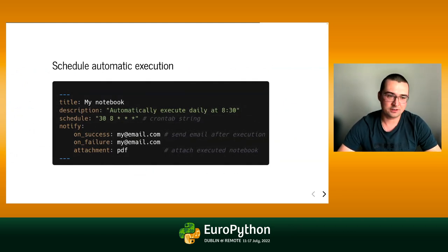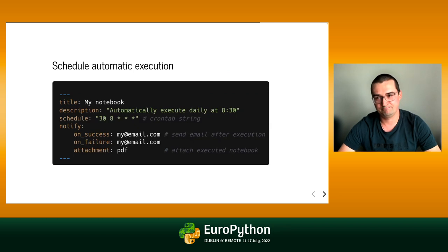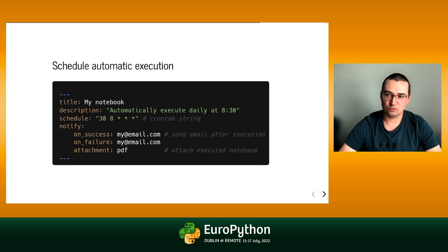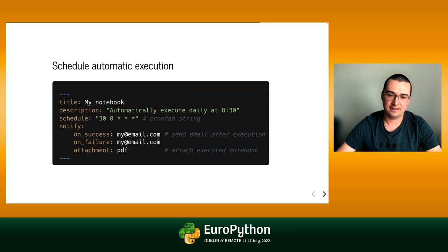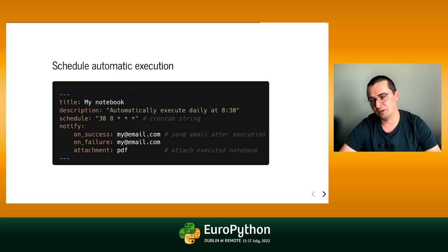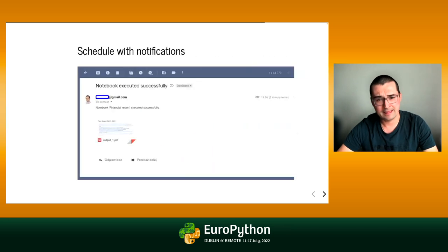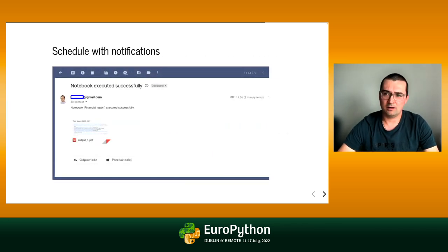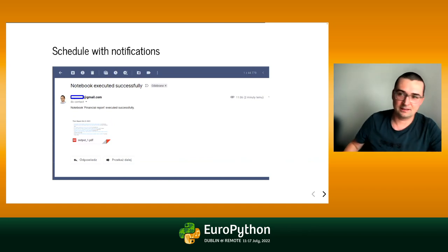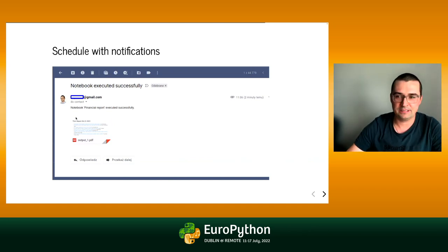Scheduling is very easy — you just use the schedule parameter that accepts a crontab string, and that's all. You can also send the executed notebook as a PDF or HTML to selected email addresses, which is quite useful for building an automated reporting system based on Jupyter notebooks. Here is an example of a mail that was automatically sent from Mercury with a PDF attachment.